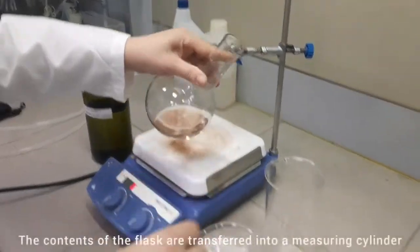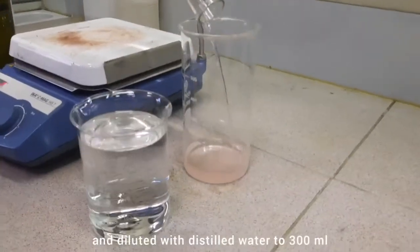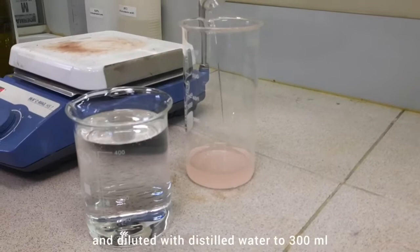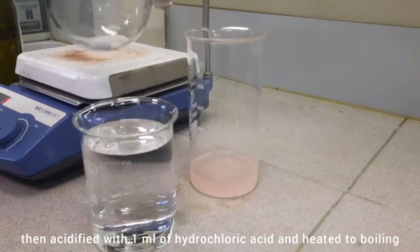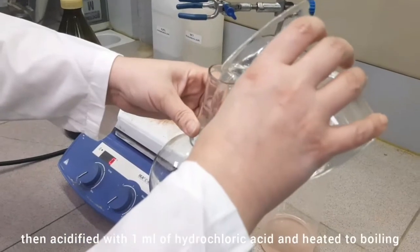The contents of the flask were transferred into a measuring cylinder and diluted with distilled water to 300 ml, then acidified with 1 ml of hydrochloric acid and heated to boiling.